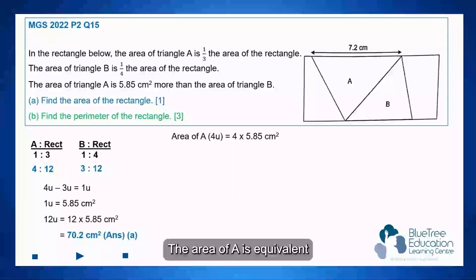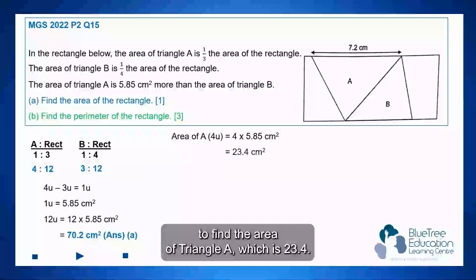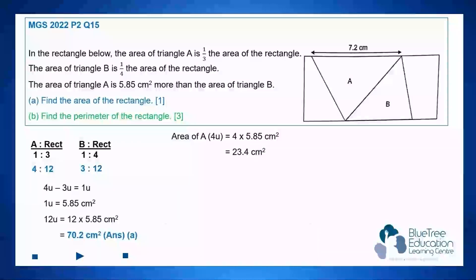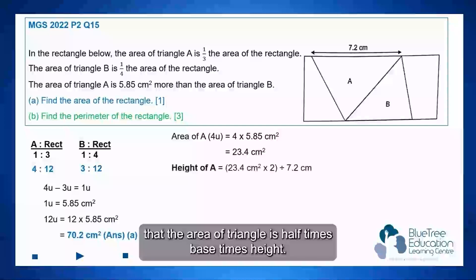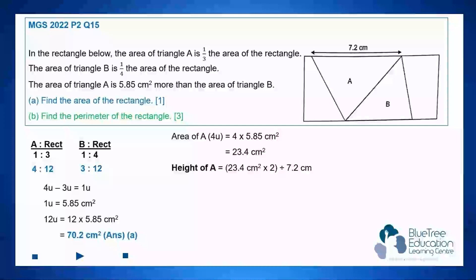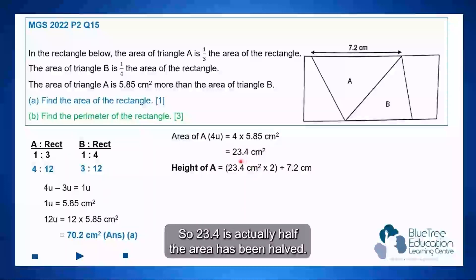The area of A is equivalent to 4 units as presented in the ratio. So we take 4 times 5.85 to find the area of triangle A, which is 23.4. As we know, the area of triangle is half times base times height. So 23.4 is actually half the area has been halved.